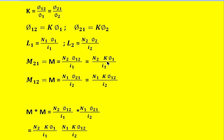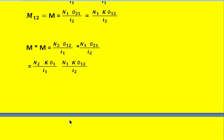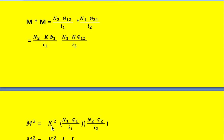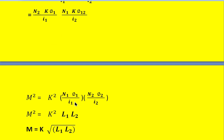Replacing the flux terms with their substitutions — N2 k phi1 divided by I1 and N1 k phi2 divided by I2 — and simplifying, M squared equals k squared times N1 phi1 over I1 times N2 phi2 over I2. Since N1 phi1 over I1 is the self inductance L1, and N2 phi2 over I2 is the self inductance L2, we get M squared equals k squared times L1 times L2. Therefore, M equals k times the square root of L1 L2.